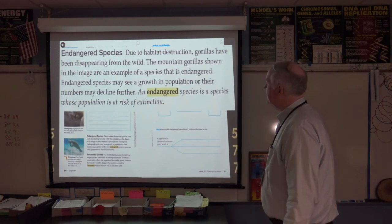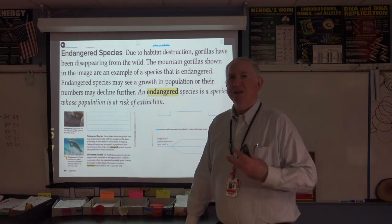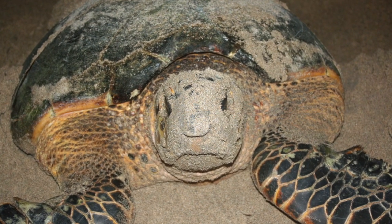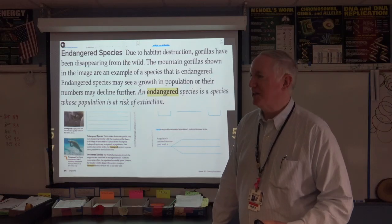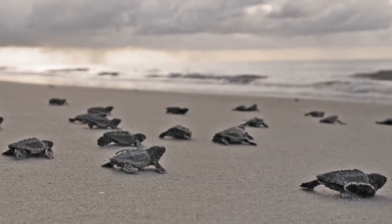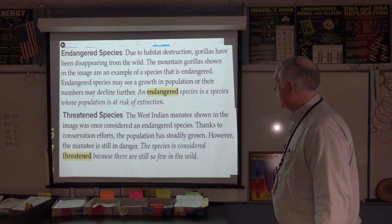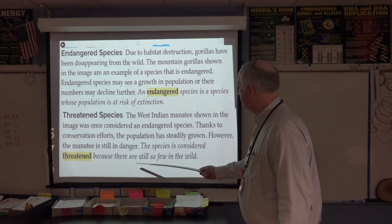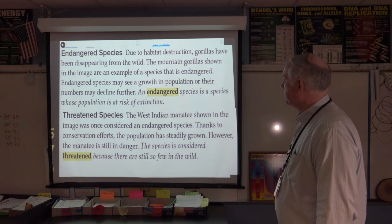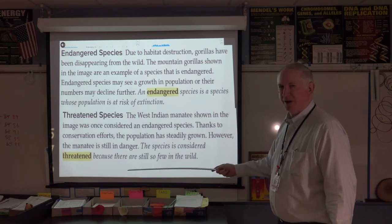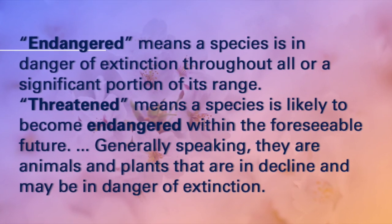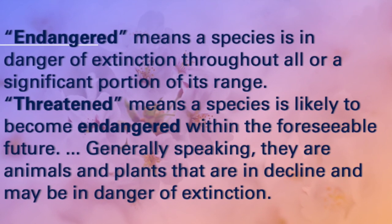An endangered species is one whose population is at risk of extinction. You've often heard about species that are endangered — sea turtles are considered endangered. They're making a pretty good comeback; I've seen lots of tracks on the beach lately, but we do need to be careful because they were close to getting wiped out too. And threatened means a species is considered threatened because there are still so few in the wild. The question is, which is worse — endangered or threatened? I think endangered is more serious than threatened.